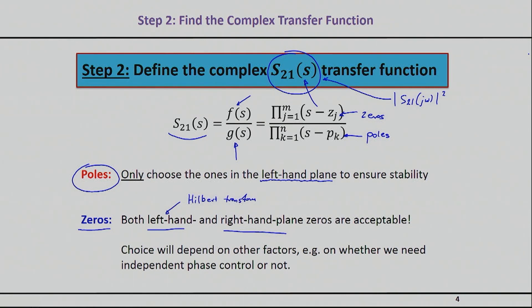On the other hand, if you choose right-hand zeros, then you can actually control both of them independently. But the synthesis becomes more complicated, and so that's the trade-off. Now you might say, from a physical point of view, when you realize a filter, what gives away if I have chosen left-hand zeros or right-hand zeros?